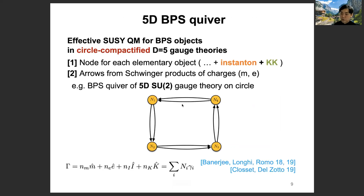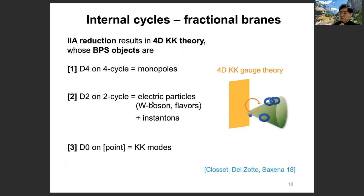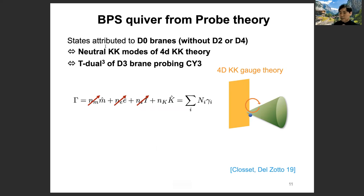To draw more diverse kinds of BPS quivers of various theories, we need to go back to the circle-compactified system. The circle compactification I introduced to bypass the extended nature of monopoles actually reminds us of the IIA reduction of M-theory. There, BPS objects are given by D4, D2, and D0 branes, representing monopoles, electric particles, instantons, and KK modes, respectively. Let's focus on D0 branes representing KK modes. States attributed to D0 branes have a charge expansion with only KK mode charge without any monopole or instanton or electric charges.